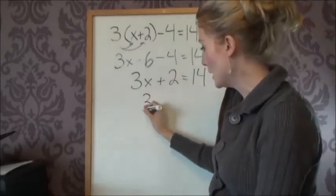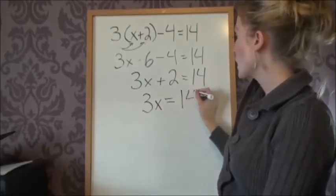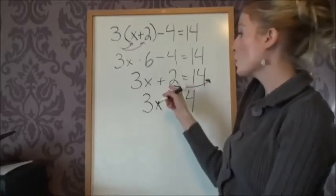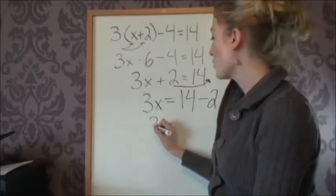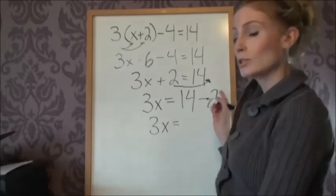So we keep the 3x here again. And we have 14. And when we bring this 2 over, it's going to change signs. So it's no longer going to be a positive 2. It's going to be minus 2. So now we have 3x equals 14 minus 2 is 12.